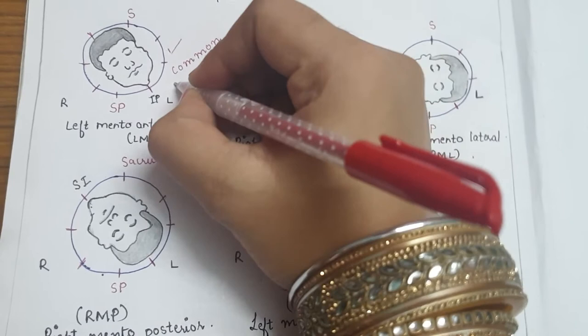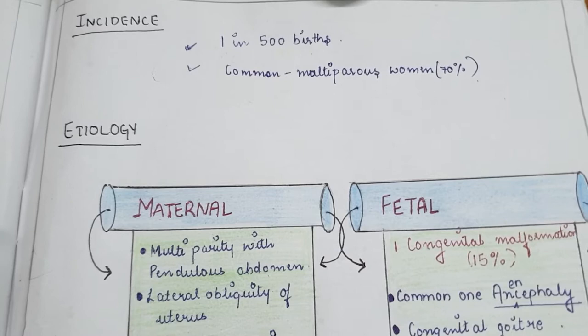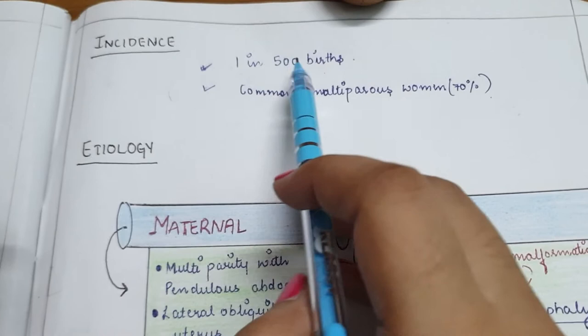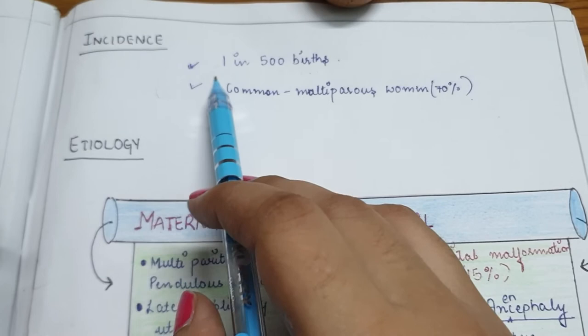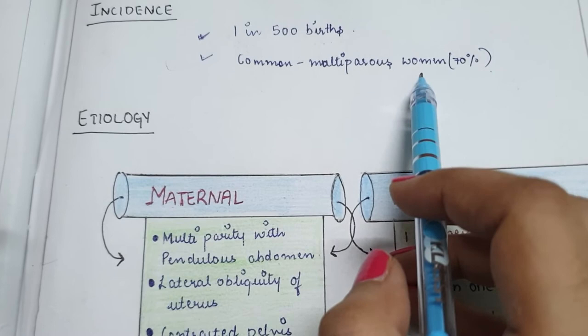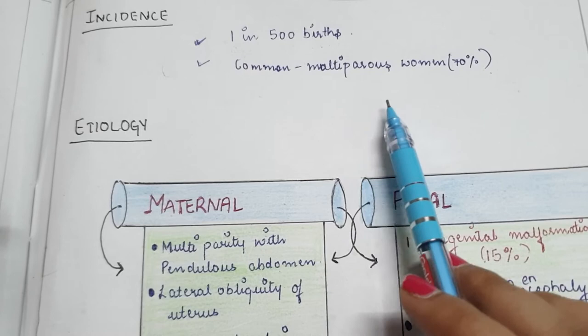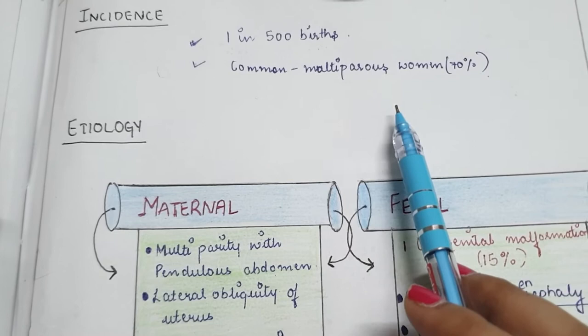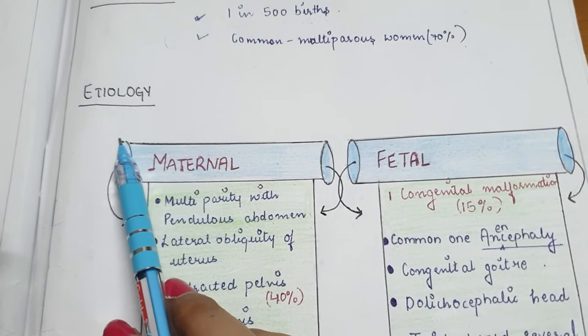The incidence of face presentation — meaning the frequency or chances of face presentation — is very less, that is one in 500 births. It is very common in multiparous women, at 70%. Multiparous women are those who are pregnant for more than one time, and it is common among them because the muscles of the abdomen are already very relaxed, which favors face presentation.